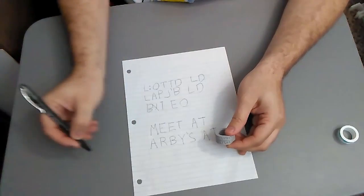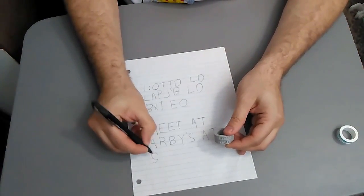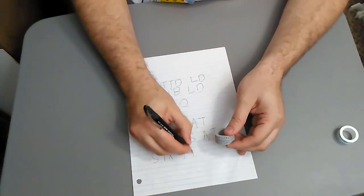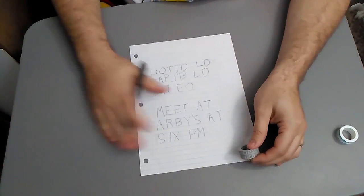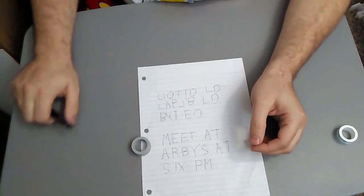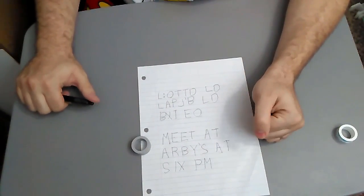Until they get the secret message written out. And they know that you want to meet them at Arby's at 6 p.m. Message transmitted. And only your friend with the decoder ring was able to read it. How cool is that?